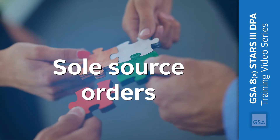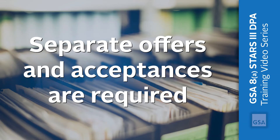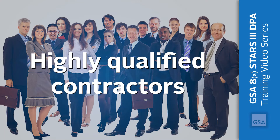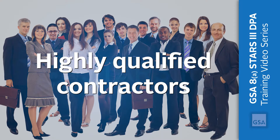Sole source orders are allowed for requirements with an estimated value up to the competitive threshold, including options. According to FAR 19.804-6, separate offers and acceptance to the Small Business Administration are required for individual task orders valued at or below the competitive threshold. 8STARS III provides access to highly qualified contractors, including industry partners with experience in emerging technology and that have performed work outside the continental United States.